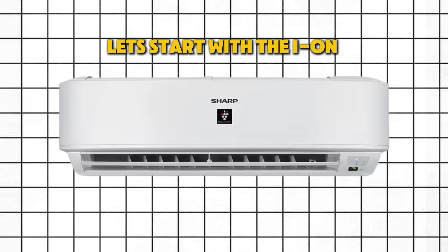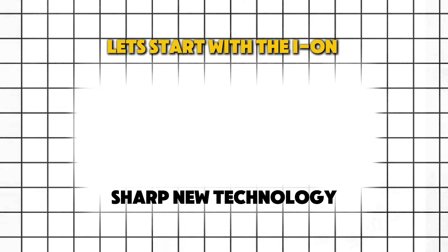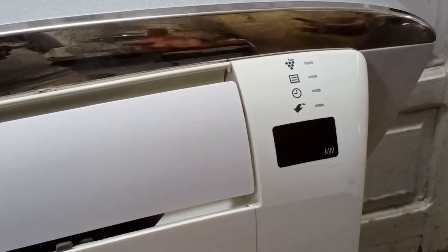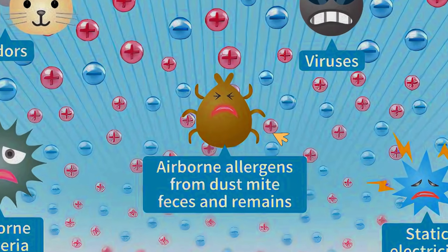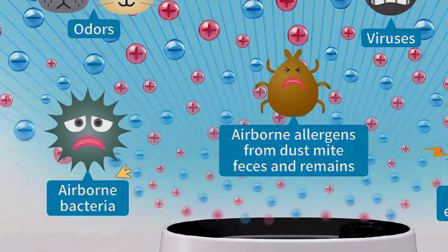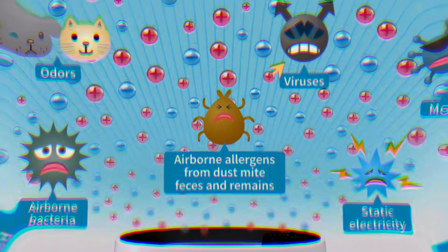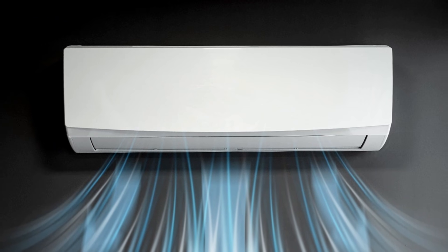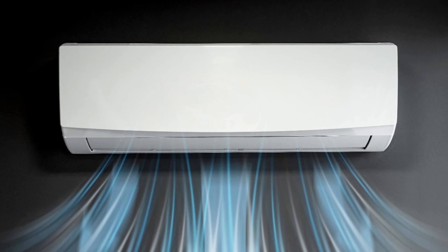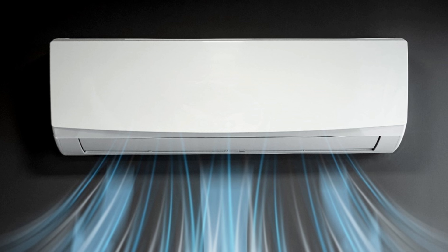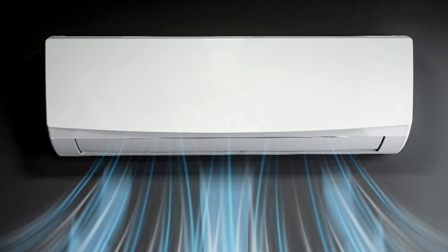Let's start with the Ion Generator, which is Sharp's new technology. In simple words, when you turn on this function, all the germs, bacteria, and viruses present in your room will be eliminated, and you receive pure air in your room and breathe comfortably and enjoy cleaner air.